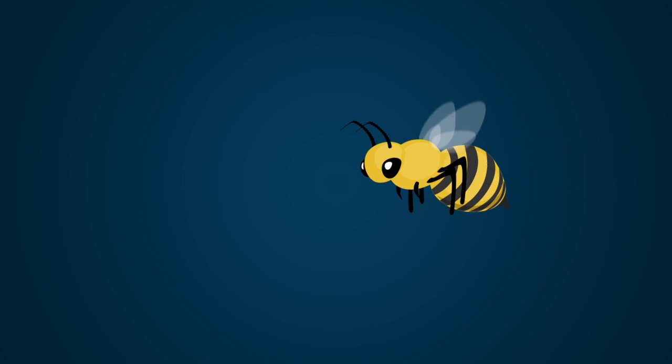The opening of the brood cell is thought to disrupt the reproductive cycle of the mite. A nurse bee can then either remove the affected larvae from the cell or instead recap the cell.